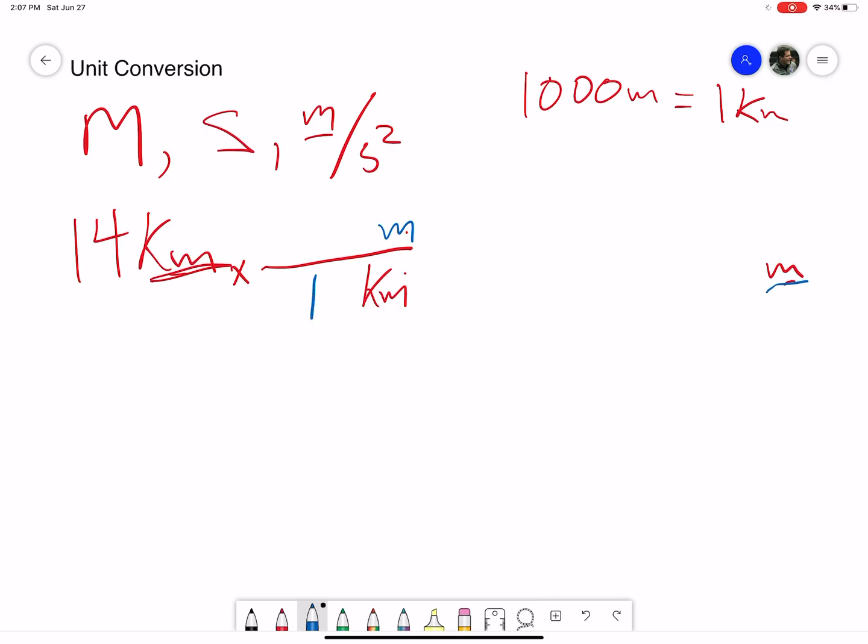Ask yourself: what's bigger, a kilometer or a meter? A kilometer is bigger than a meter, so I put a one next to the kilometer. We know that there's a thousand meters in a kilometer, so I'll put one thousand meters up top.